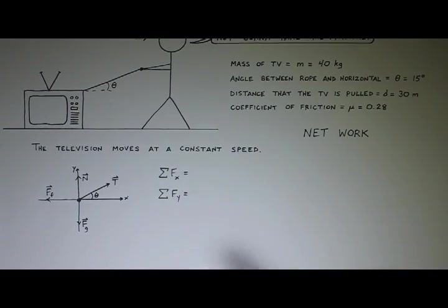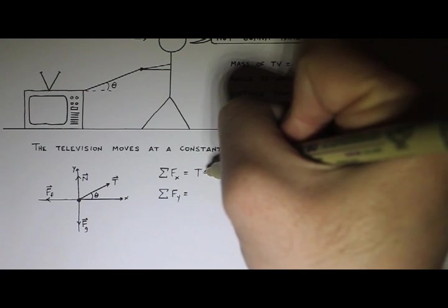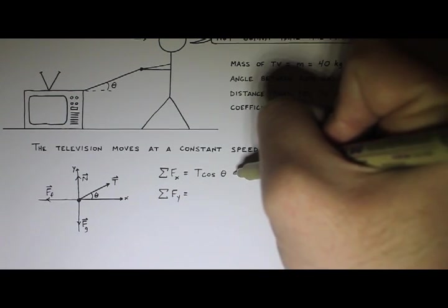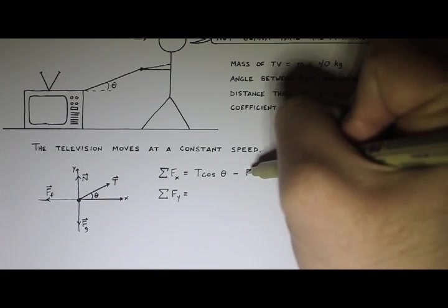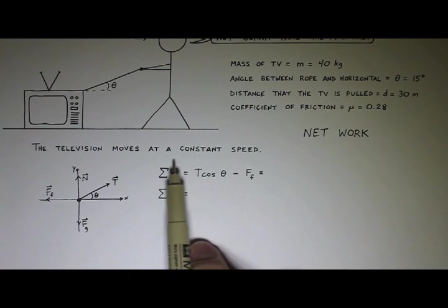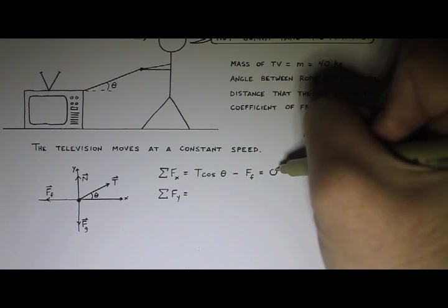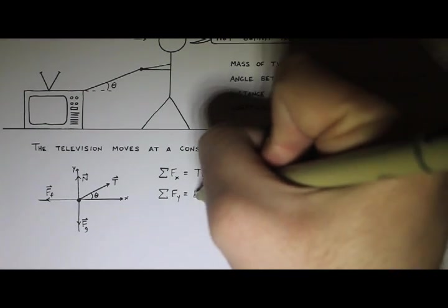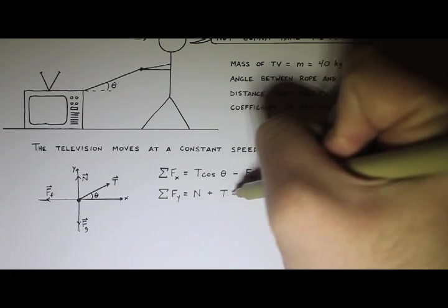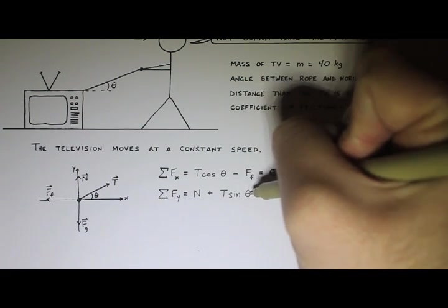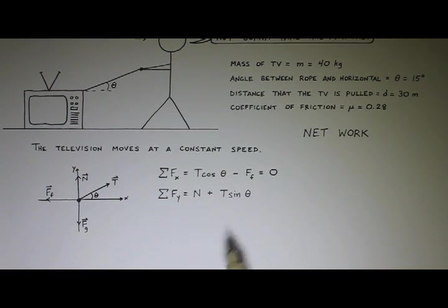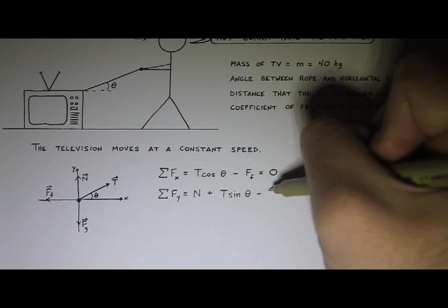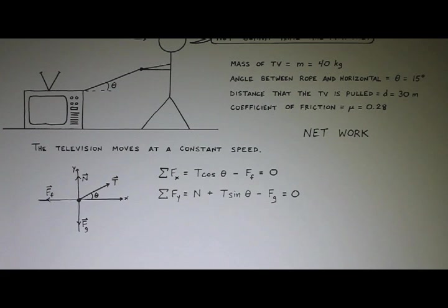Let's write the sum of the forces in the X direction and the sum of the forces in the Y direction. In the X direction, I have tension — it's going to be T cosine theta, that's the X component — and then friction going the other direction, so it gets a minus sign. Since it's moving at a constant speed, there's no acceleration, so that equals zero. In the Y direction, I have my normal force and my component of tension in the Y direction — if one is cosine theta, the other will be sine theta — and then I have the weight. It's definitely not accelerating in the Y direction.